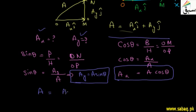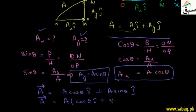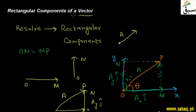Using these trigonometric ratios, vector A equals A cosθ î plus A sinθ ĵ. This is how we resolve a vector into its rectangular components along x and y, which are at 90 degrees to each other. Students can resolve different vectors using this method, which is the best way to split a vector into its component values.